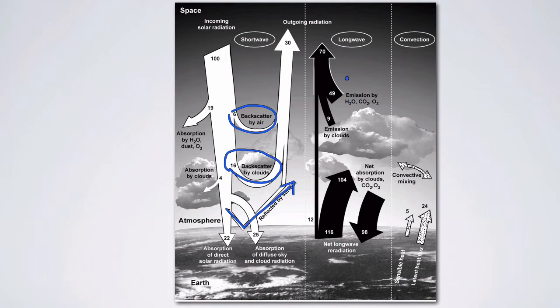Longwave radiation — the lower energy particles — starts here. Longwave radiation is released from the surface of the Earth and goes up to be absorbed by clouds, CO2, or ozone. Some of that longwave radiation is then radiated back downwards, and some is emitted back into space. Sensible and latent heat flux are also smaller parts of the equation. In a nutshell, that's the basic pattern of shortwave and longwave radiation.